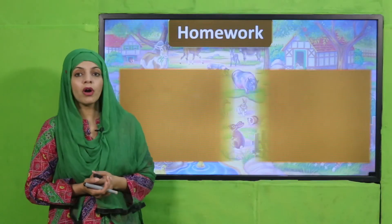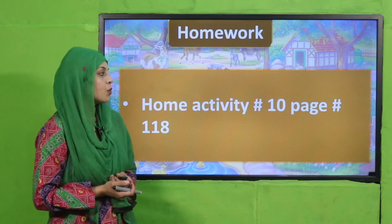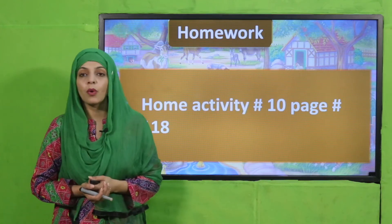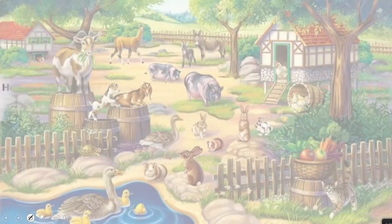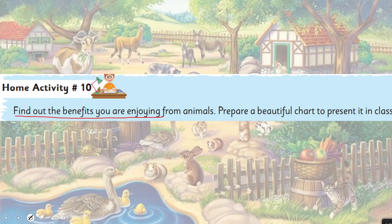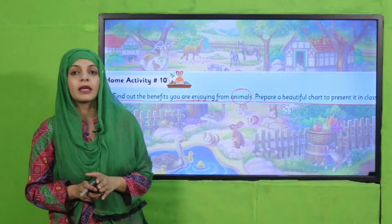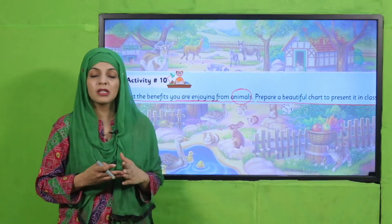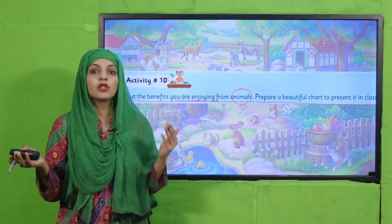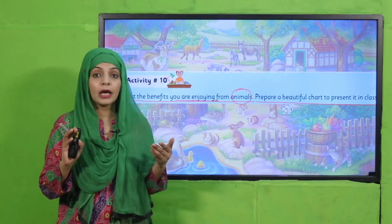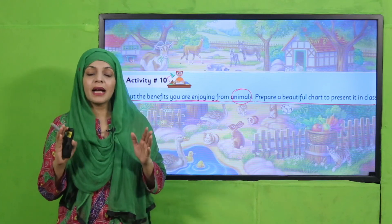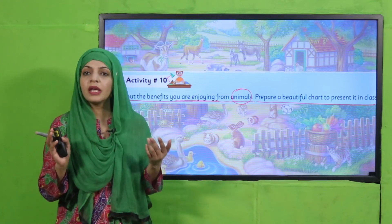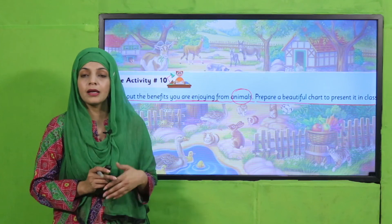Now let's move forward towards the homework. For homework, you will do Home Activity Number 10 given on page number 118. The home activity says: find out the benefits you are enjoying from animals and prepare a beautiful chart to present in the class. Make a chart showing what animals give us and the benefits we use from them. Add pictures and then present it in your class. Take help from your parents or elder brother or sister.